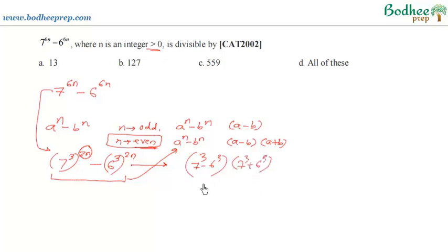So let's put the values. 7 cube is 343 minus 6 cube is 216, and the next is 343 plus 216. On further simplification we can write this particular term as 127 into, and this term will be 559.